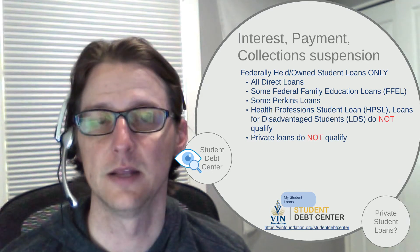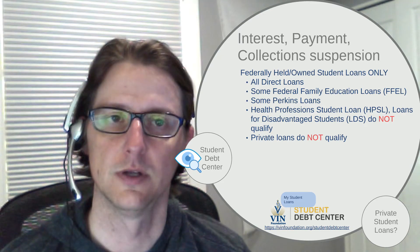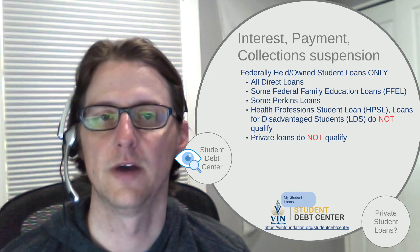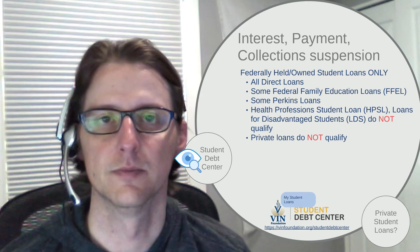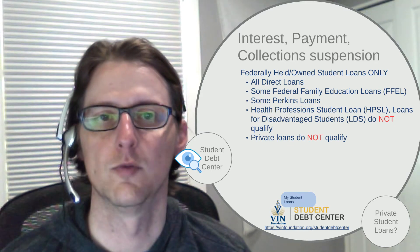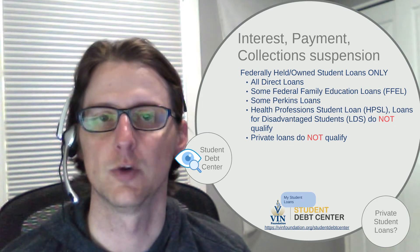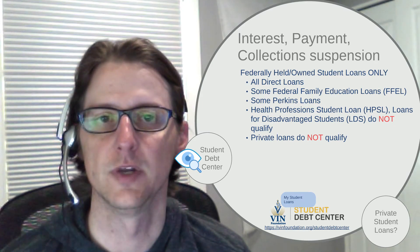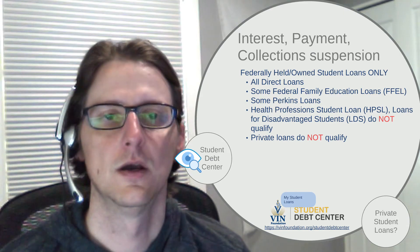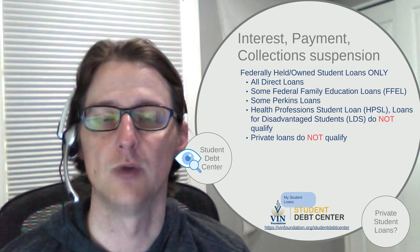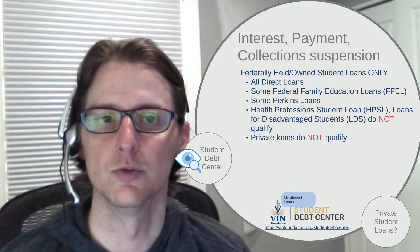However, if you were to consolidate them into a direct consolidation loan, then they could qualify for the suspension. Whether or not you should do that is kind of beyond the scope of what we're going to cover here. If you have specific questions about that, feel free to email studentdebt@vinfoundation.org. Private loans do not qualify, and there's nothing that you can do to make them qualify.